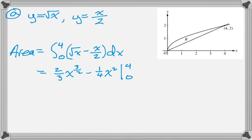0 is a really nice bound to have here, because it makes everything 0 out. So we get 2 thirds. If I plug in 4, I have to take the square root, which is 2 and cube it, to get 8, minus 1 fourth of 4 squared.